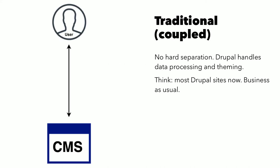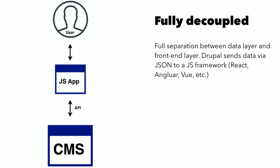Just for comparison, a traditional approach has Drupal handling all the back-end data and all of the theming, then sending that right to the user. Whereas for a fully decoupled approach, you have the JavaScript application intercepting the data. The user still requests to the CMS, but this JavaScript application handles all the front end from data sent via API from Drupal. I'm not going to tell you what frameworks to use — you can really use any.